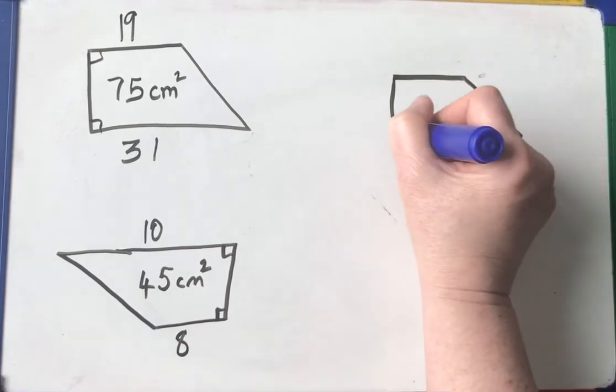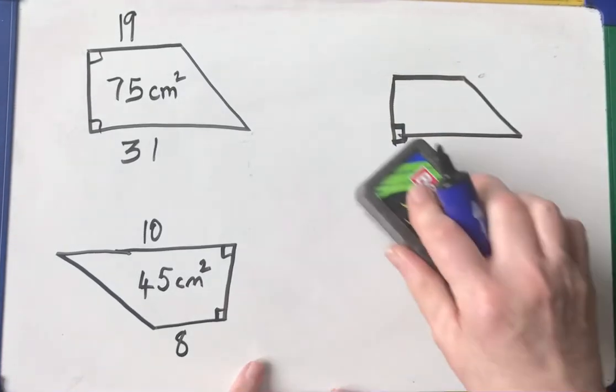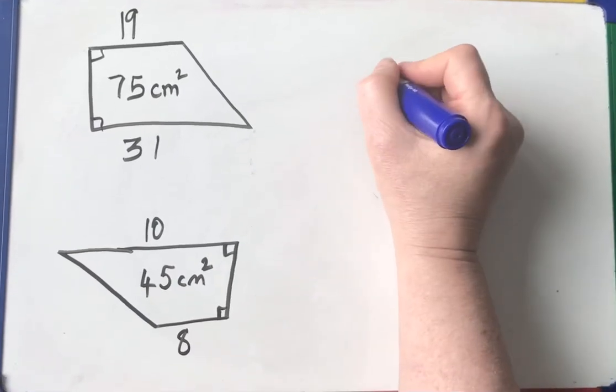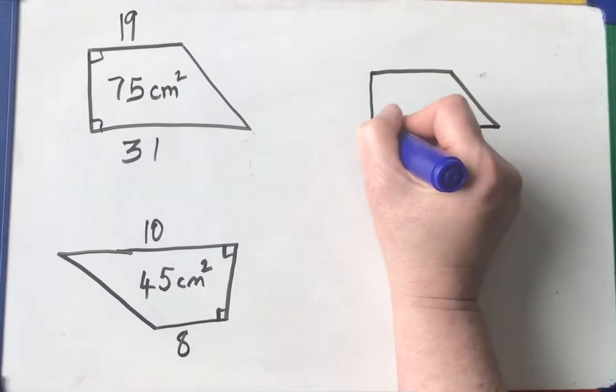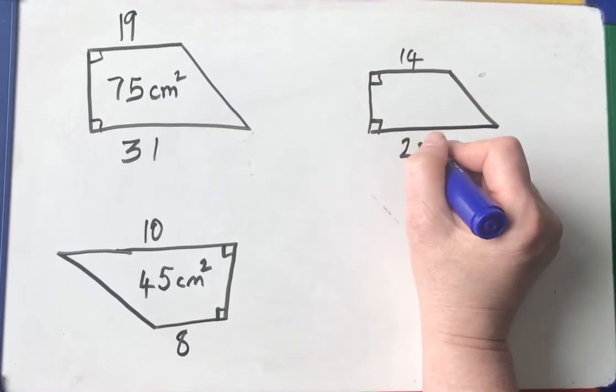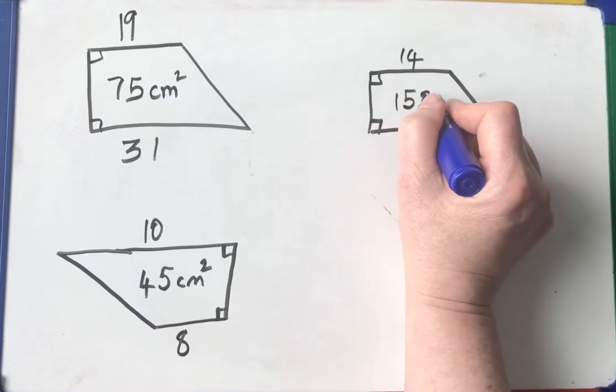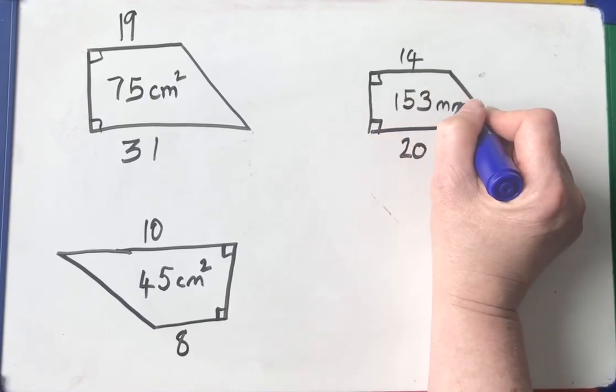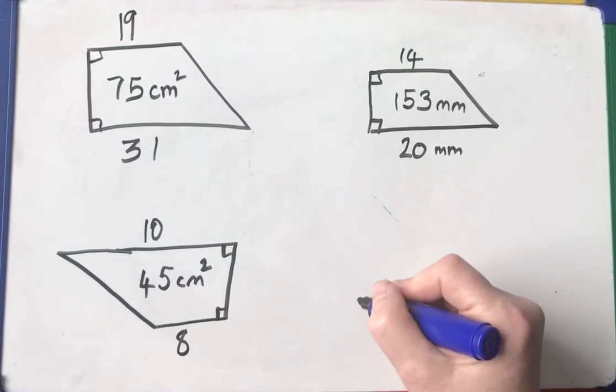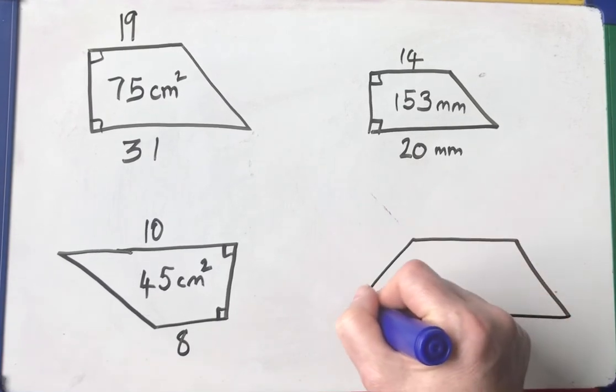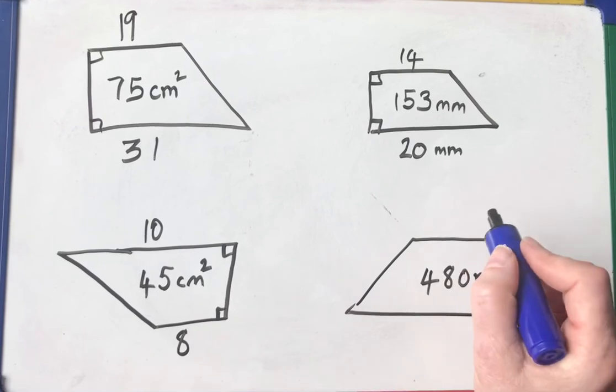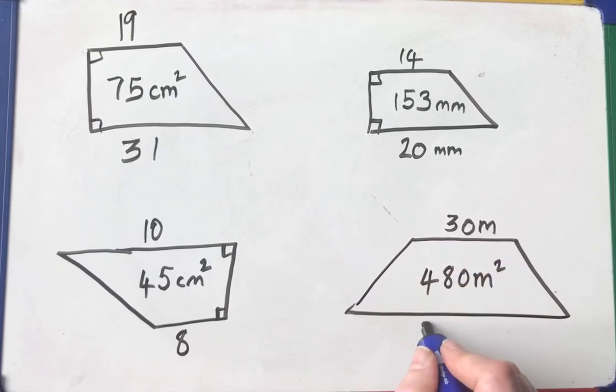Half the sum of the parallel sides times the space between. Oh, I don't like that drawing. It's because I'm multitasking, singing and drawing at the same time. Obviously not my talent. Half the sum of the parallel sides times the space between them. That is how we calculate the area of a trapezium. Let's call them millimeters. Let's mix up and get a bit brave. And then finally, another isosceles. And the area is 480 meters squared. That length is 30 meters. This length is 50.